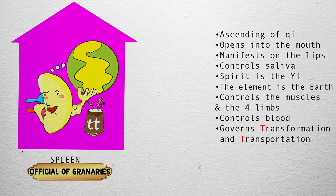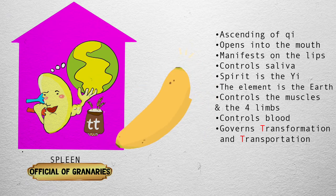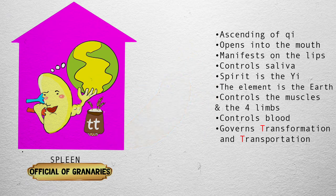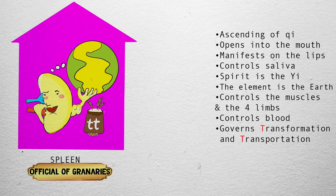Miss Spleen is very sweet — sweet like a banana. She even kind of looks like a banana. Bananas are yellow, and in TCM, yellow is the color of the earth element. Bananas are also a food, and the spleen is the official of the granaries.